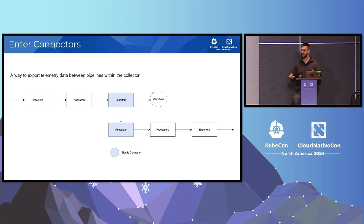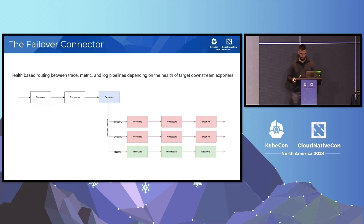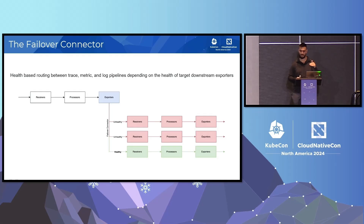Another cool thing is that it doesn't have to be a one-to-one mapping — you can have one exporter portion mapped to, say, five different starts of different pipelines. That opens the door to essentially the failover connector. The failover connector is a health-based router in the collector that routes your traffic and determines which path is active based on the health status of each pipeline. It'll always try to export to the highest priority pipeline that's healthy. In this example, if the first two pipelines went down, it's now exporting to the third.